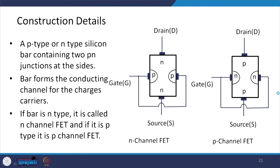In FET construction, a p-type or n-type silicon bar contains two p-n junctions at the sides. Here we have an n-type silicon bar with a p-type region, giving two p-n junctions — one on each side. Similarly, for p-type bar, we have two n-p junctions. This bar forms the conductive channel for the charge carriers. If the bar is n-type, it is called an n-channel FET; if p-type, it is called a p-channel FET.